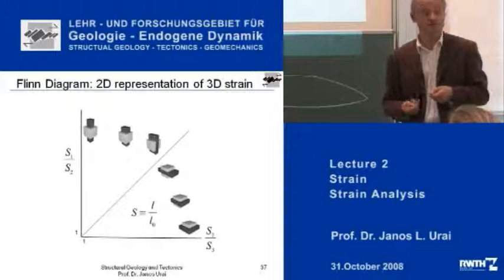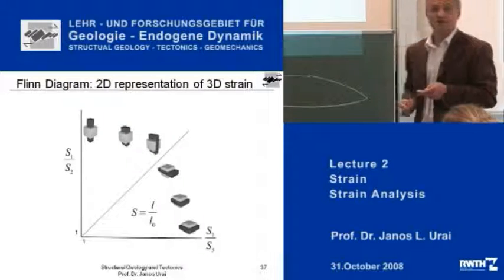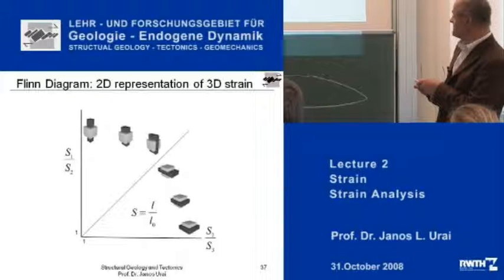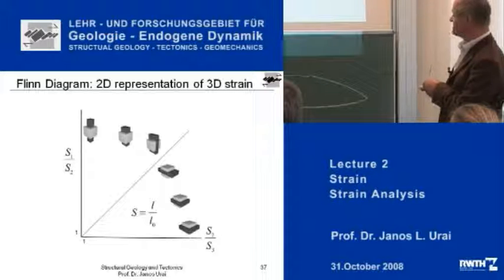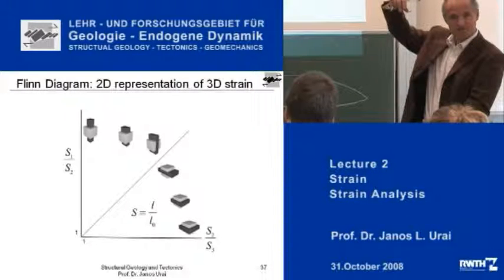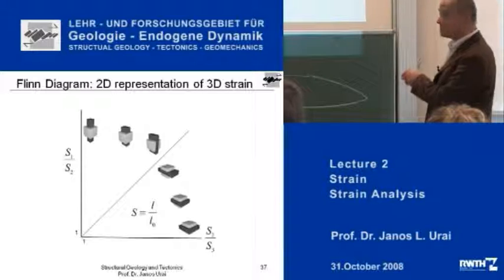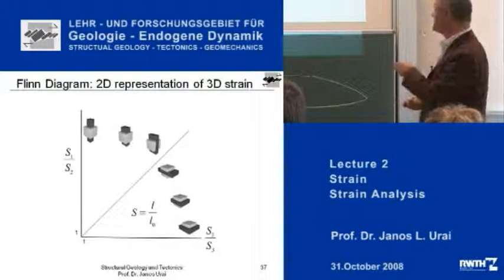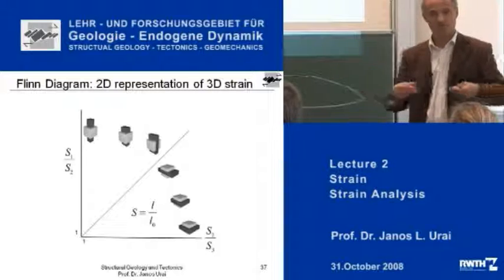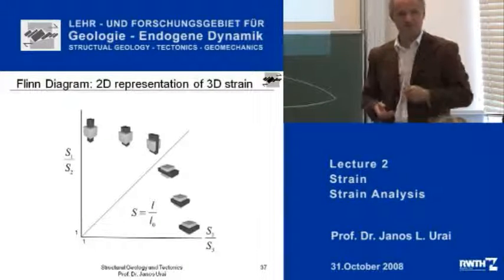It is a two-dimensional representation of three-dimensional strain. They have taken the ratio between the longest axis of the ellipsoid and the middle axis on one side, and the ratio between the middle axis and the shortest axis on the other. In this diagram, if you plot the strains, you get cigars on this side, and on the other side ellipsoids that look like a pancake. In the middle you get ellipsoids which look like a surfboard — deformed a lot in two directions but not the third.